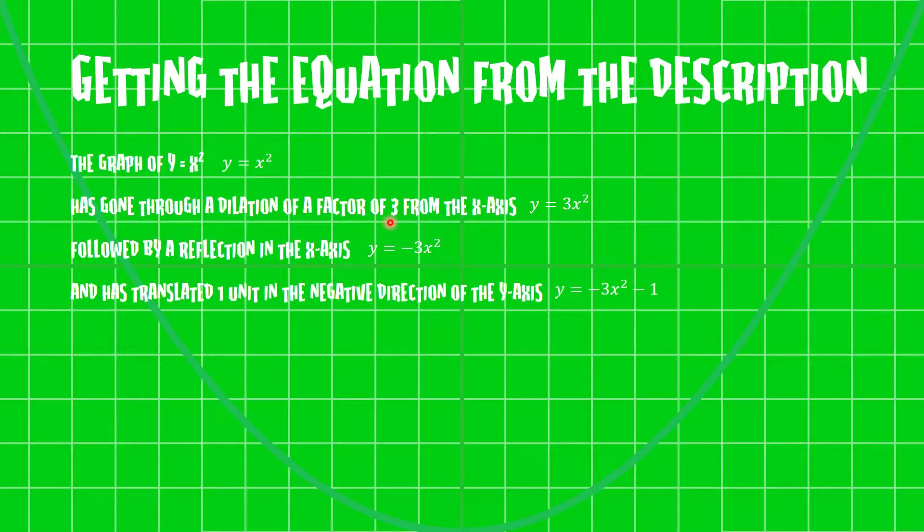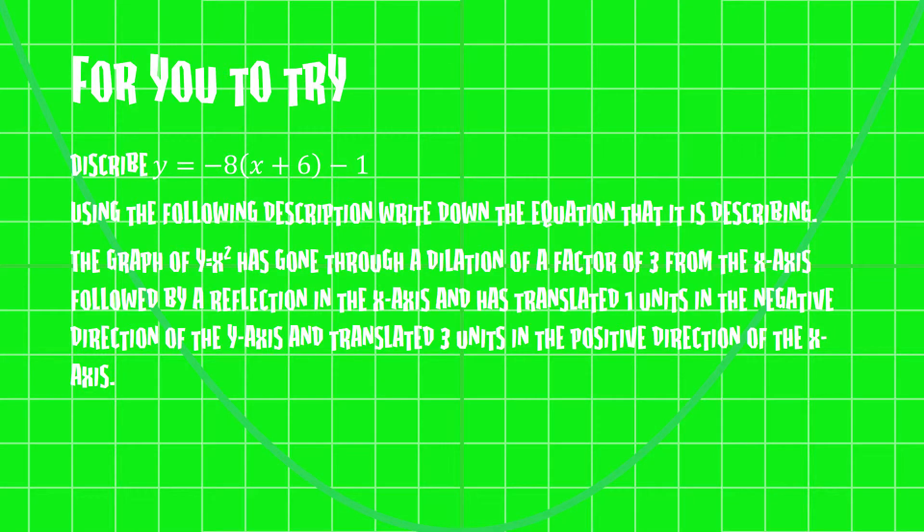And it's translated five units in the positive direction of the x-axis. Now remember, it says positive here, and because this is the x-axis that we're talking about, we're going to have to treat it as the opposite. So positive 5 is going to become negative 5, and we're going to get -3(x - 5)² - 1, and that's our final answer.